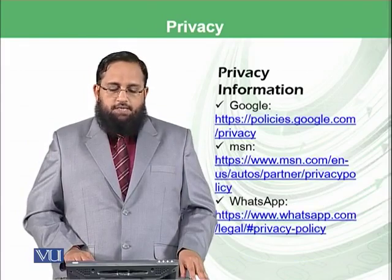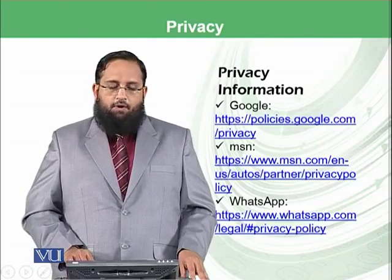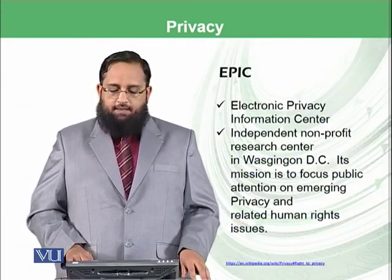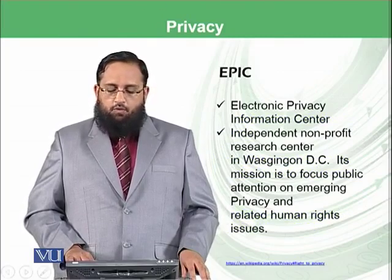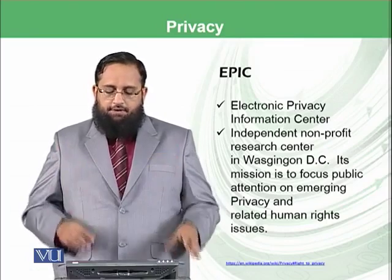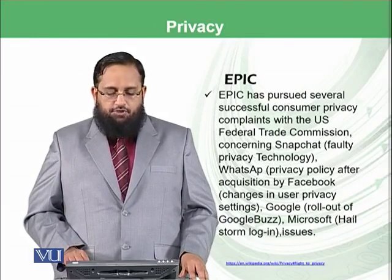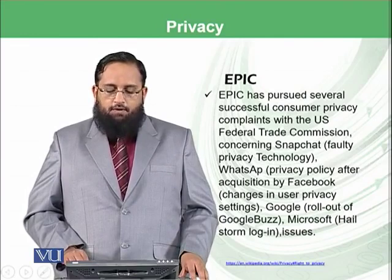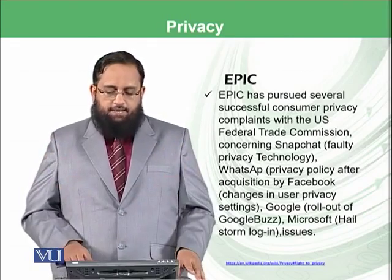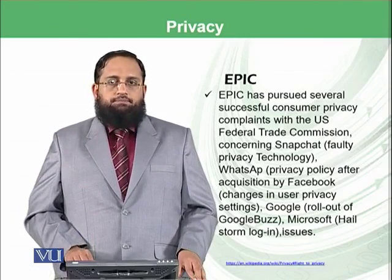You may have seen the privacy information of Google, MSN, and WhatsApp. These links allow you to see what kind of privacy information they have made available for their users. Then there are organizations like EPIC, the Electronic Privacy Information Center, which is a non-profit research center in Washington, D.C. Its mission is to focus public attention on emerging privacy and related human rights issues. They have pursued several successful consumer privacy complaints with the U.S. Federal Trade Commissioner concerning Snapchat's faulty privacy technology, WhatsApp's privacy policy after acquisition by Facebook, changes in user privacy settings, Google's rollout of Google Buzz, and Microsoft Hailstorm login issues.